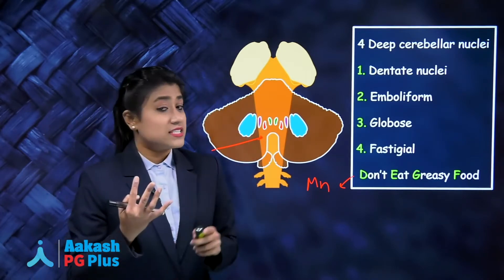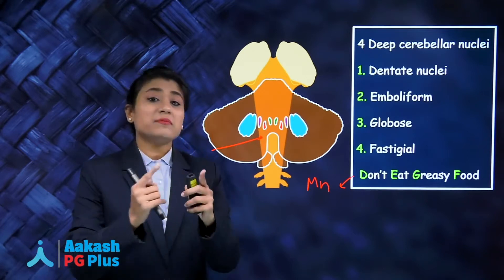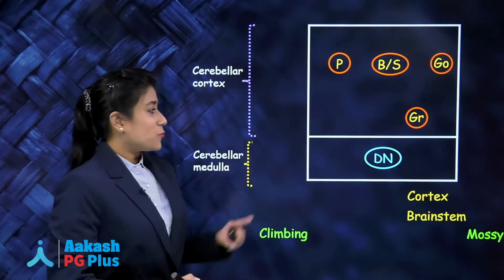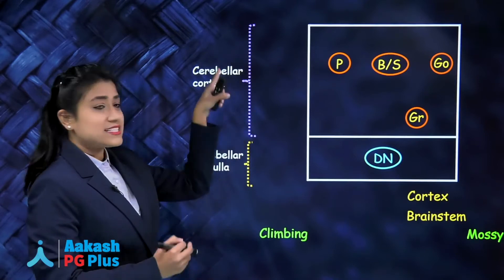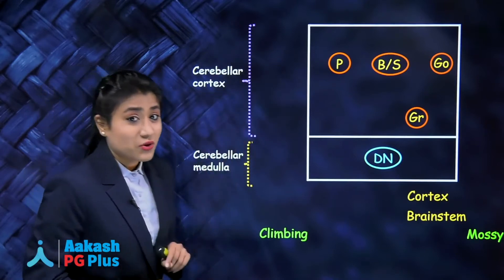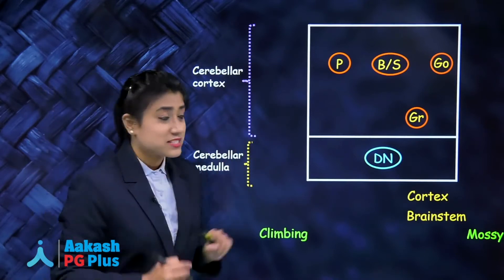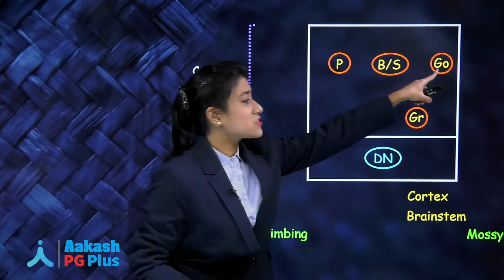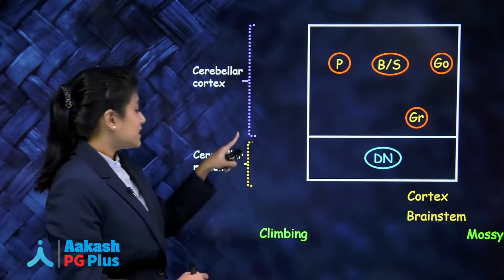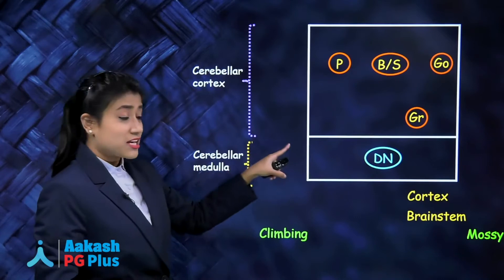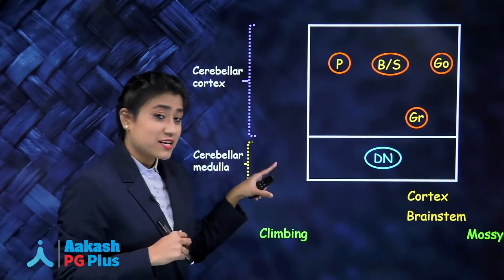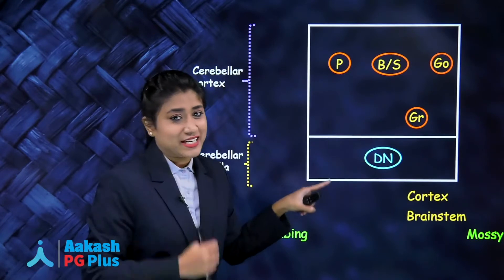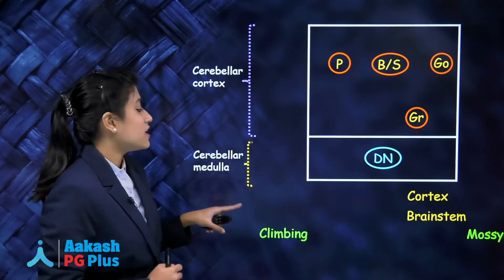The cerebellar cortex contains five cells — Purkinje, basket, stellate, Golgi, and granular cells. The cerebellar medulla is the deeper part of the cerebellum, and it contains the four deep nuclei we just discussed.